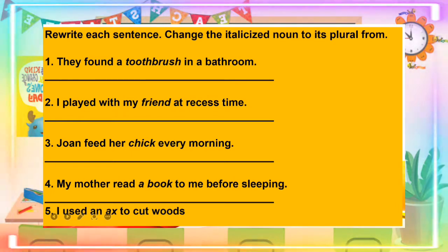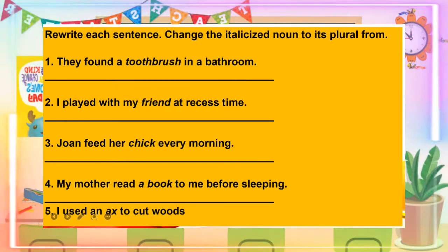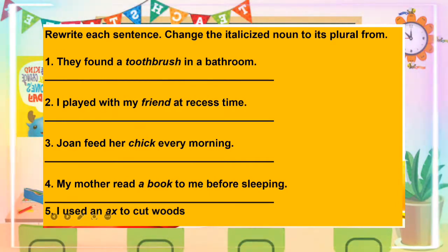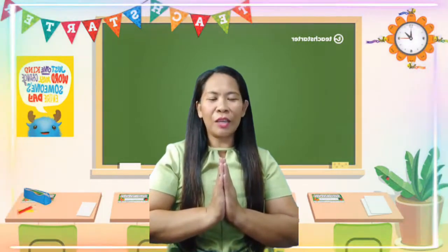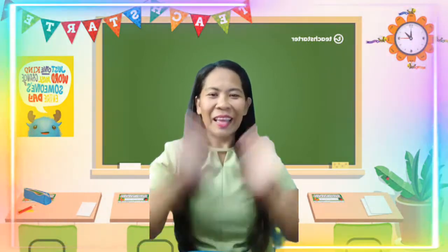Now I know that you really understood what was discussed today. For your assignment, rewrite each sentence and change the italicized noun to its plural form. Number one: they found a toothbrush in a bathroom. Number two: I played with my friend at recess time. Number three: Joanne fed her chick every morning. Number four: my mother read a book to me before sleeping. Number five: I used an ax to cut woods. Thank you, class, for joining today's discussion. I hope you have learnings today. Always be safe and stay healthy. See you tomorrow.